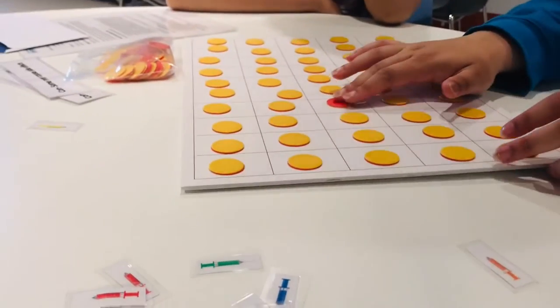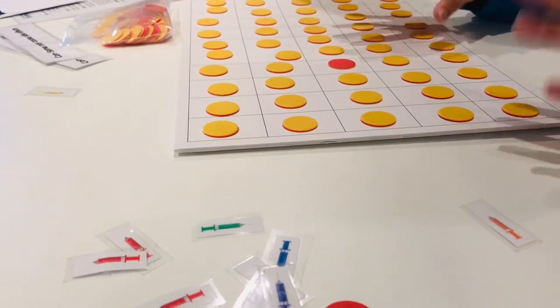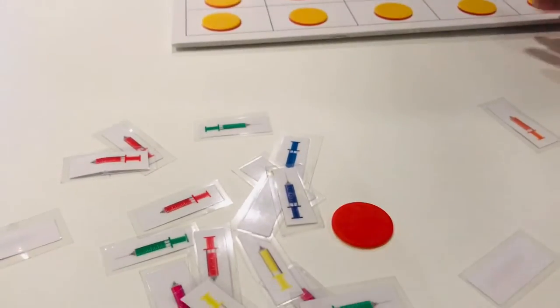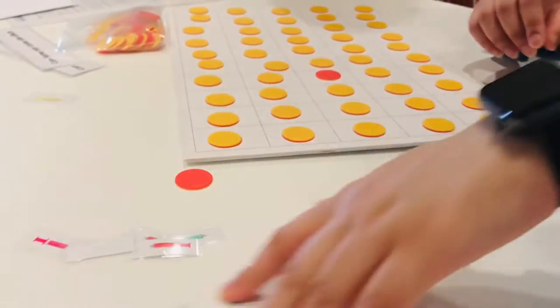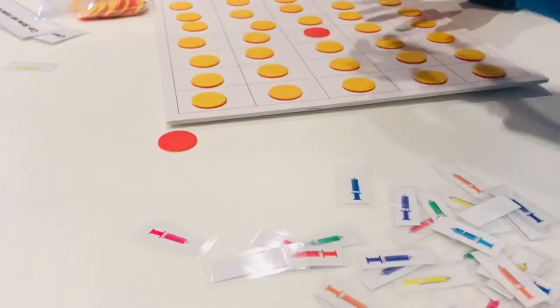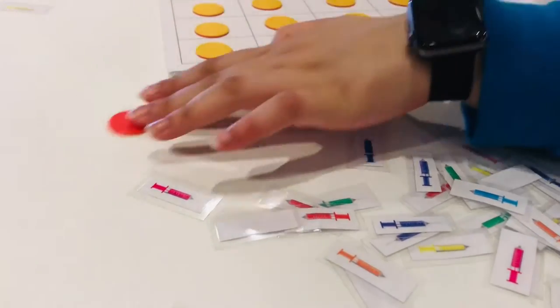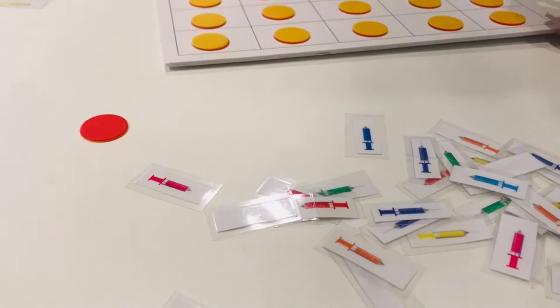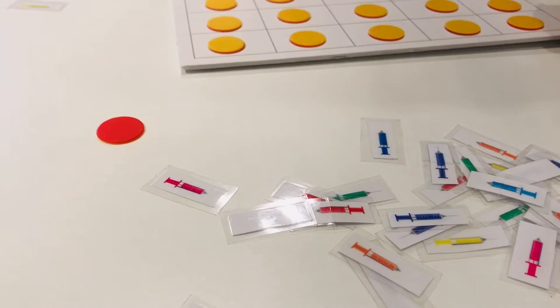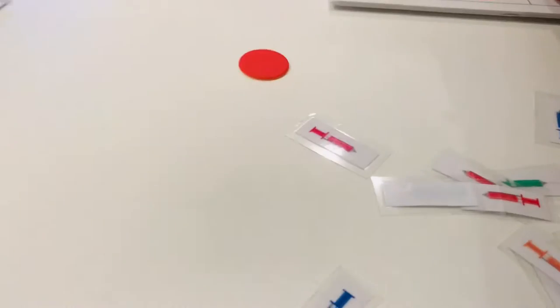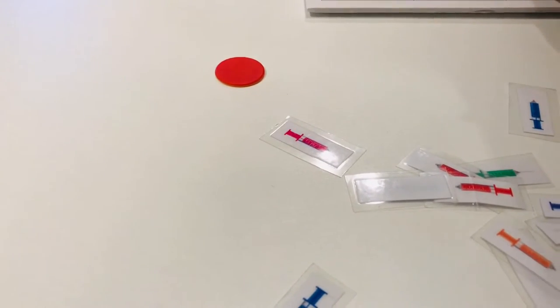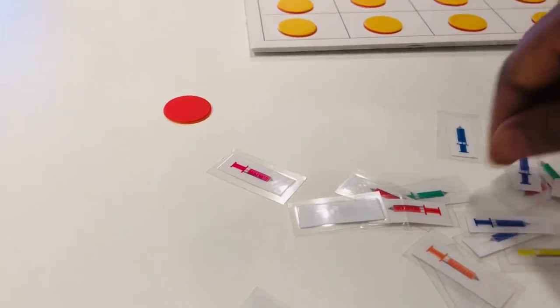If one person gets it and everyone else doesn't have protection on it, what do you think might happen? Spread. Yeah, exactly. Do you want to start turning over some people around that person there? So yeah, it's going to start spreading. Maybe this one also spreading? So why did you choose those ones? Because they're the closest. Yeah, exactly.